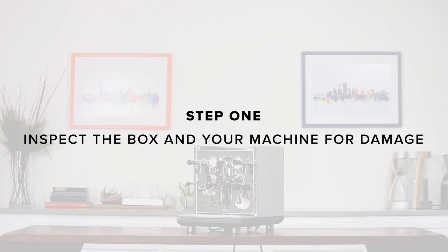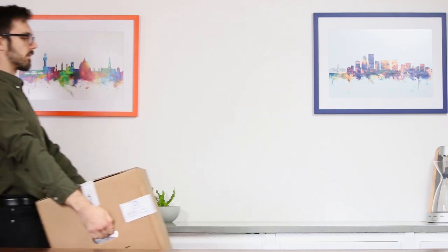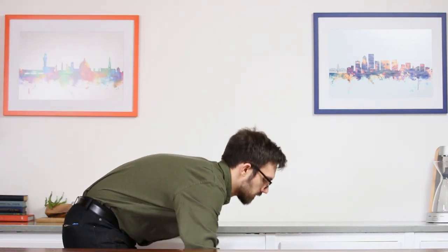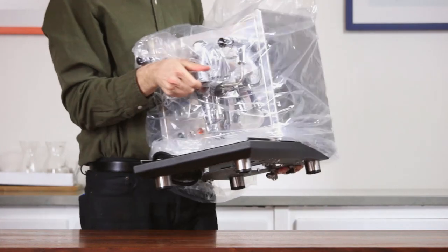Step 1. Inspect the box and machine for damage. Remove the inner box and remove the machine from the inner box. We recommend saving all of the packing materials and boxes.